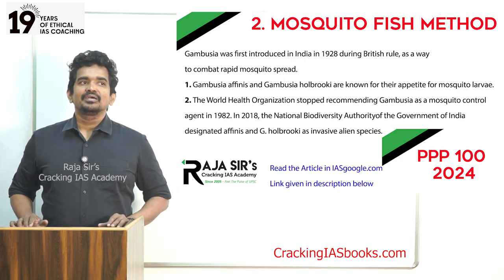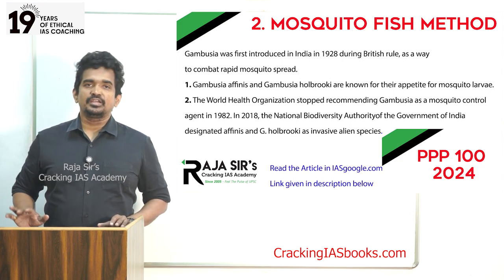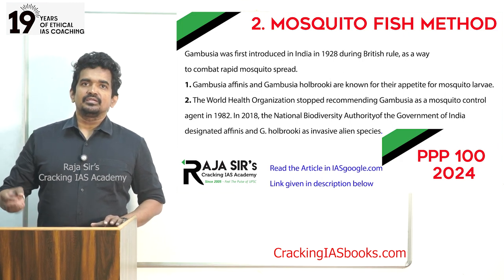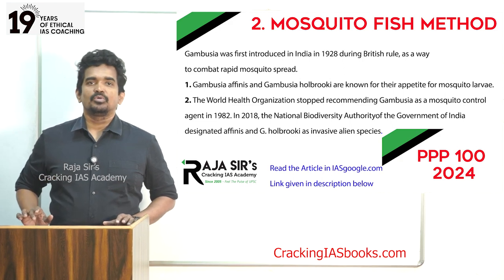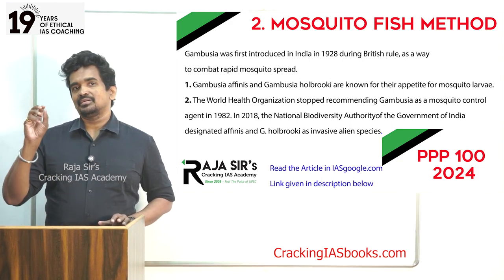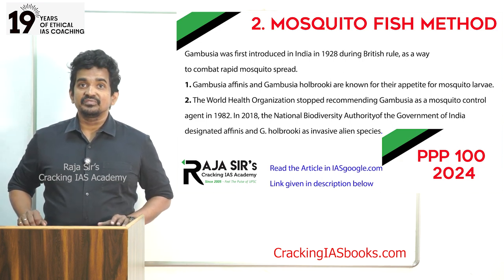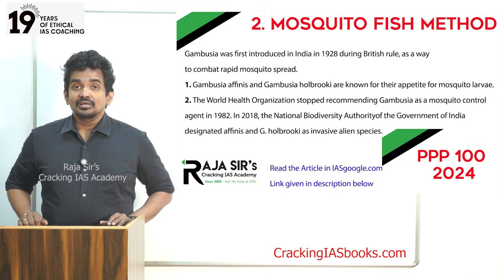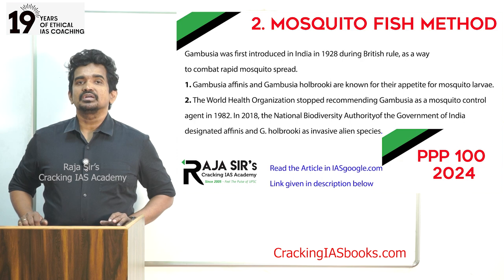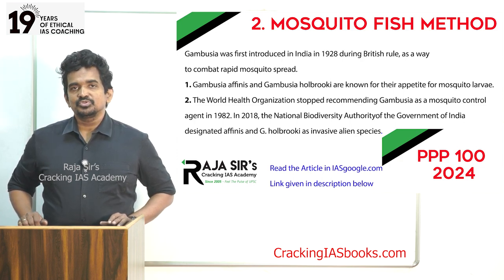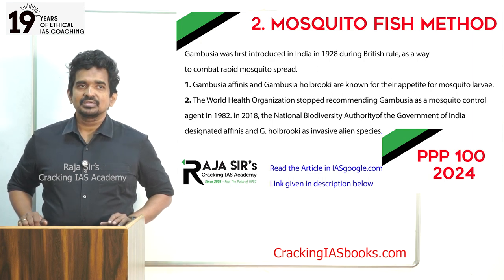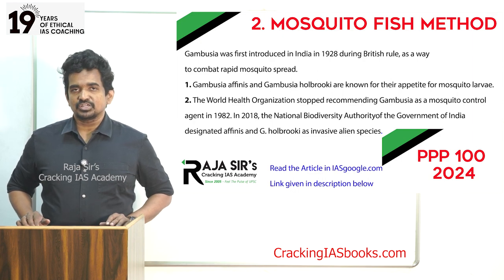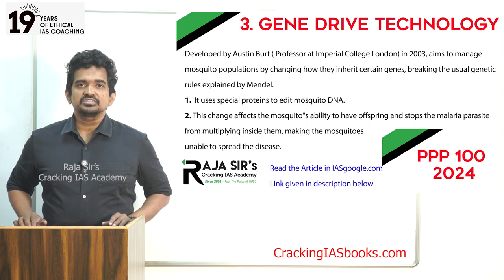The next method is the mosquito fish method. There are primarily two species of Gambusia, which is popularly known as the mosquito fish. This Gambusia fish eats mosquito larvae generally found in ponds, lakes, nearby river bodies, or house wells. However, there is one warning regarding Gambusia fish — many world bodies concerned with conservation of nature have noted that Gambusia is an invasive species. Most countries are no longer using it, but still, in India, a few states continue to use Gambusia fish as a mosquito control strategy.